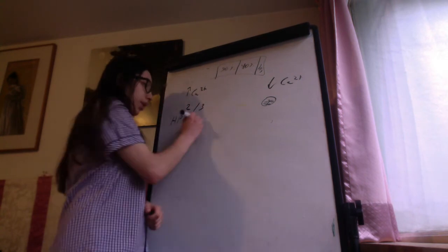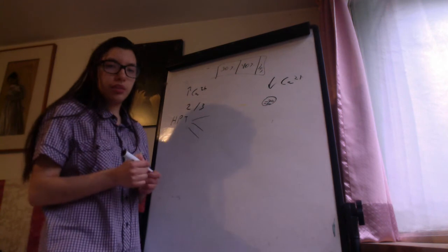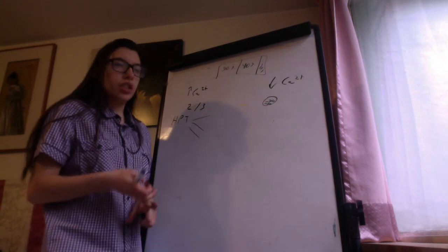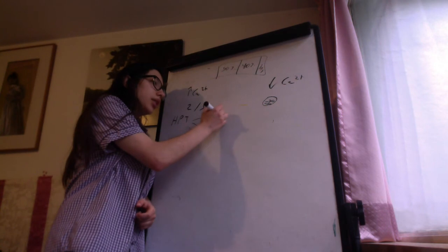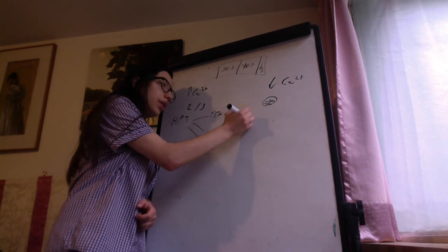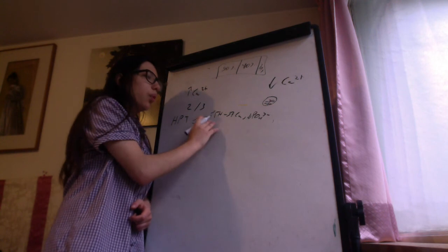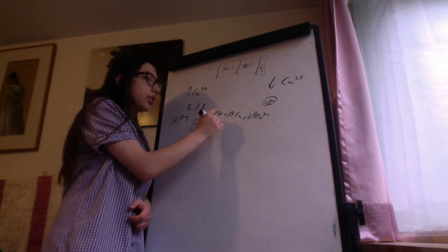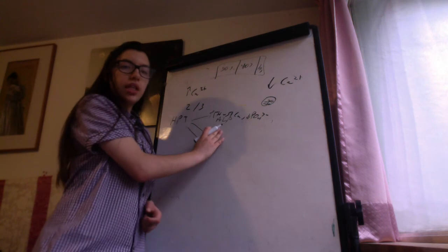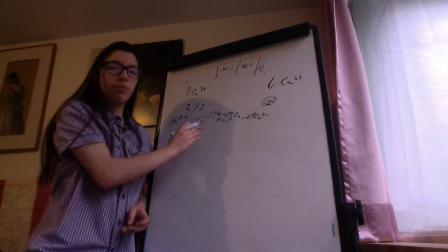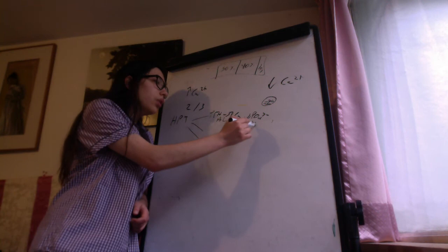Primary hyperparathyroidism is when the gland secretes excess PTH — this could be due to adenoma, carcinoma, or hyperplasia. The increase in PTH leads to increased calcium and decreased phosphate. We measure PTH activity by the increase in alkaline phosphatase, which is the marker of osteoblast activity. We also see increased cyclic AMP in the urine.